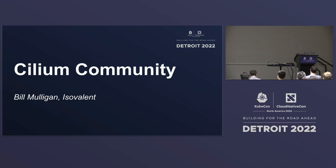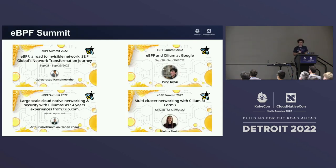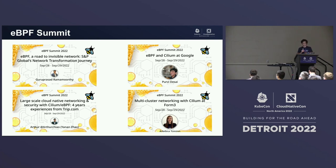Next up is Bill Mulligan from Isovalent. Since joining Isovalent, it's been amazing to see the growth in both the Cilium and eBPF communities. If you weren't at eBPF Summit, there are a lot of great talks about people using Cilium in production — Pervid had a talk there, as did SMP Global, trip.com, and Form 3. Check out those talks to learn about how they're using Cilium in production today.